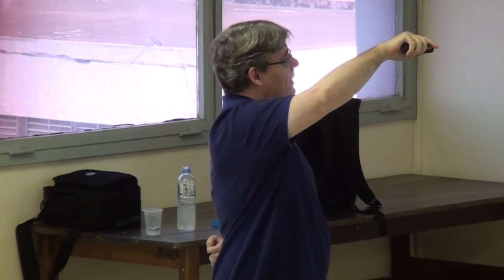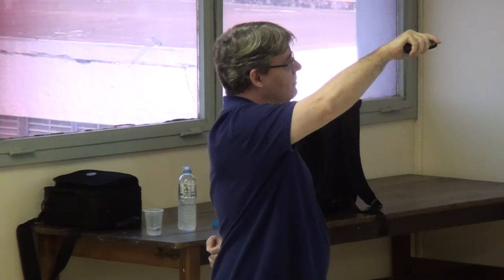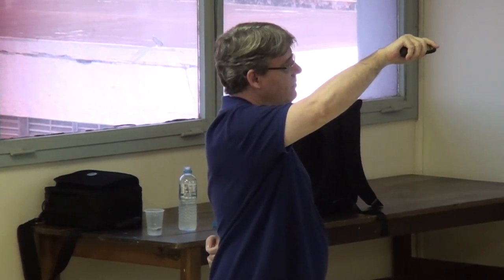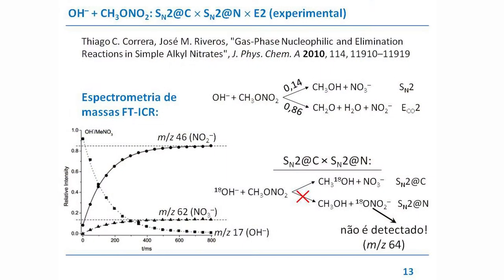O que temos aqui é a intensidade relativa do sinal da relação massa-carga 46, que corresponde ao nitrito, e 62 que corresponde ao nitrato. A reação é a seguinte: a hidroxila ataca o carbono ou nitrogênio — se for SN2, vai liberar o nitrito ou o nitrato; se houver ataque no hidrogênio da metila, vai formar água e ocorrer a dissociação do produto iônico levando ao formaldeído e ao nitrito. O que é medido são esses dois ânions: nitrito e nitrato.